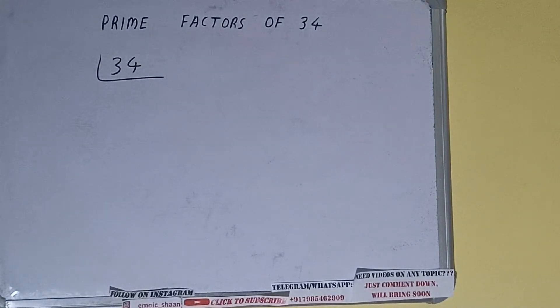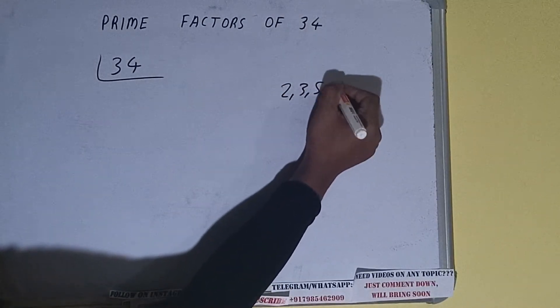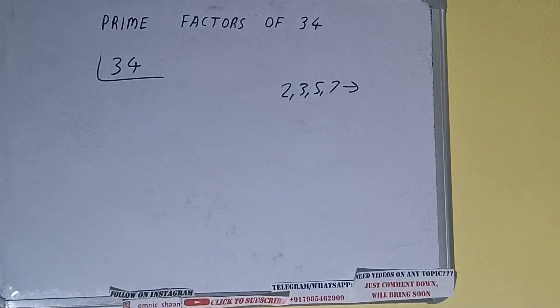The next thing we need to know about is what are prime numbers. So prime numbers are numbers that are divisible by 1 and the number itself like 2, 3, 5, 7 and so on. Alright.